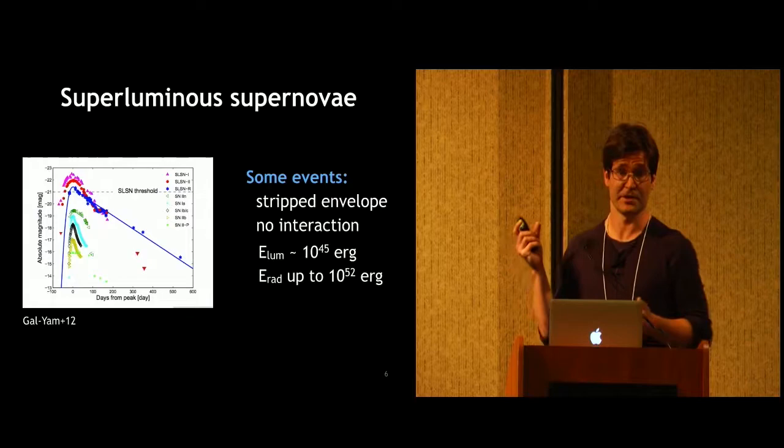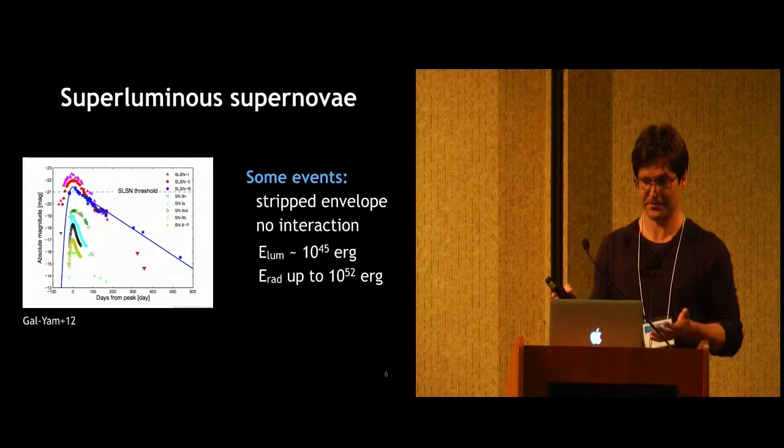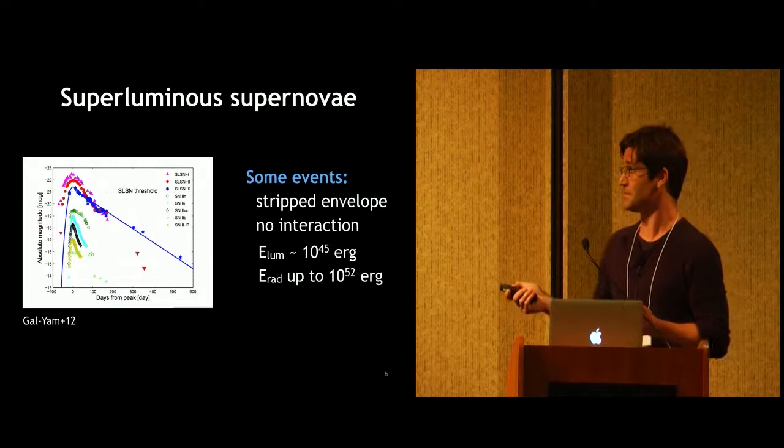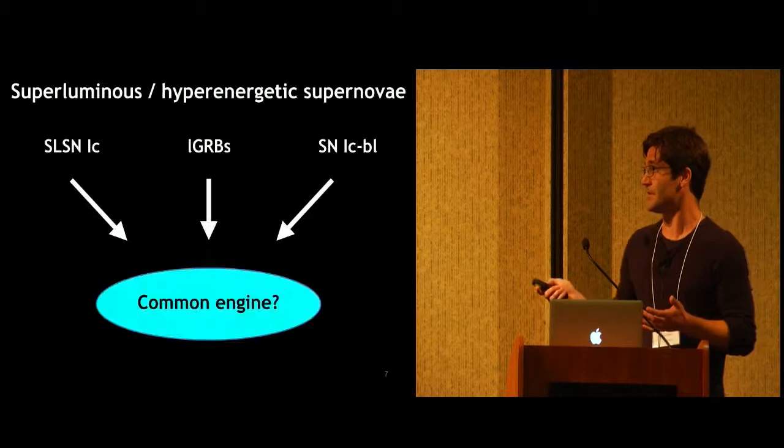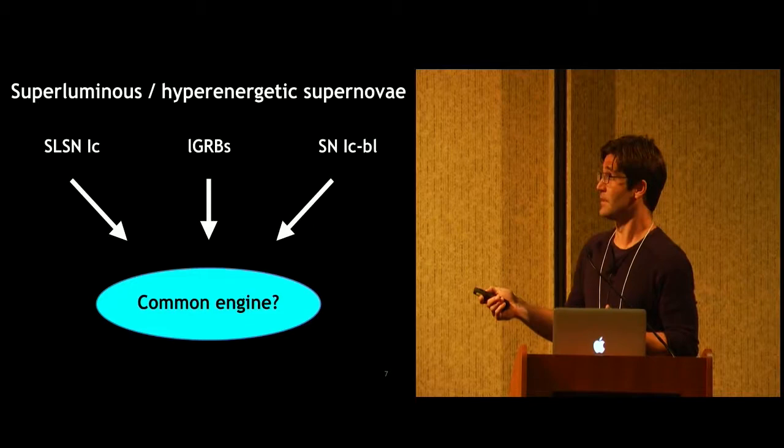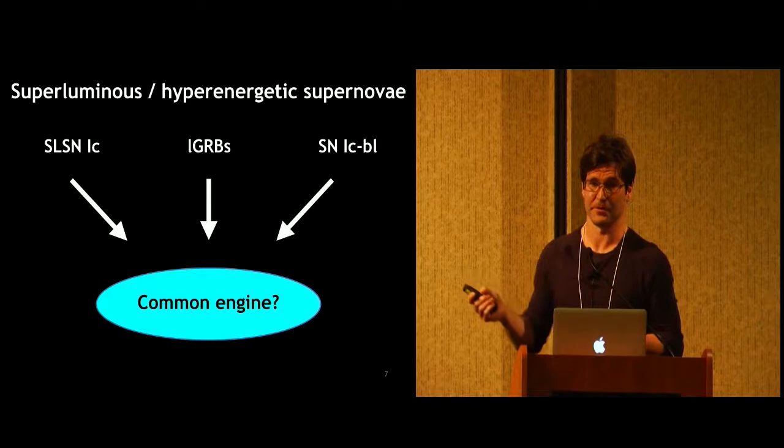Another class that recently has gotten a lot of attention are super luminous supernovas. So these are now more luminous in their light curve as we observe them. But also some of these events show the same characteristics, as in they are stripped envelopes showing no hydrogen, no helium in the spectrum, show no interaction with the circumstellar medium that could explain why they're more luminous. So there's really this question out there right now in the community, and this is one of the hot topics that's being debated, is there a common engine connecting all of these different phenomena? Namely supernova type 1c broadlines, long GRBs, and then the super luminous supernova of type 1c.